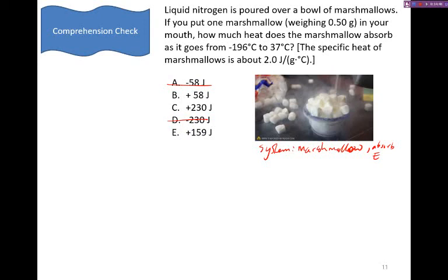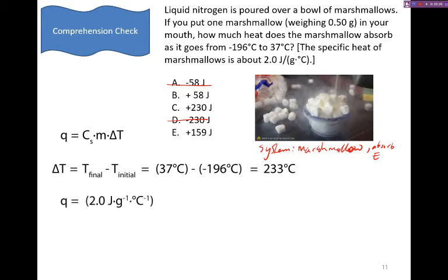Now, how endothermic, you ask? Let's find out. To do this, we need to account for the change in temperature, the mass, and the specific heat of the substance. So the change in temperature is found by taking the final minus the initial, which is 37 degrees, minus a negative 196, for a total change of 233 degrees Celsius. We then take and multiply the specific heat, times the mass, and the change in temperature, and we get this is equal to about 233 joules. Accounting for significant figures, this becomes 230 joules.